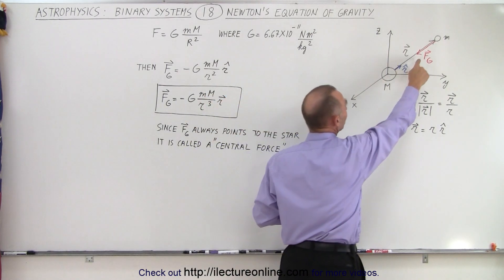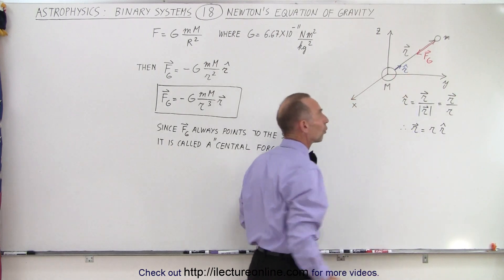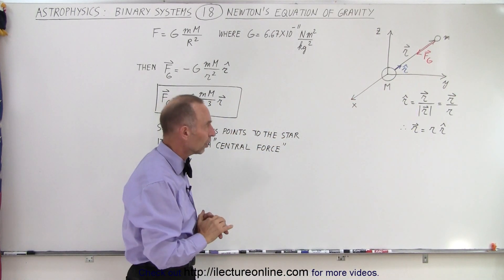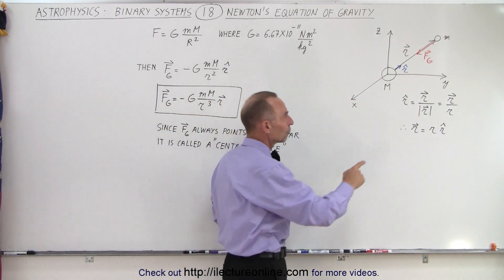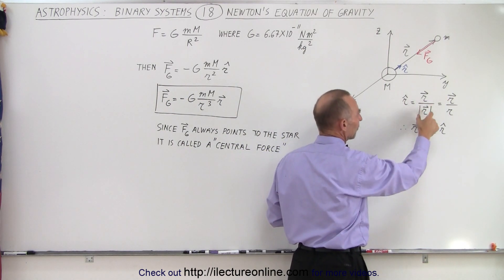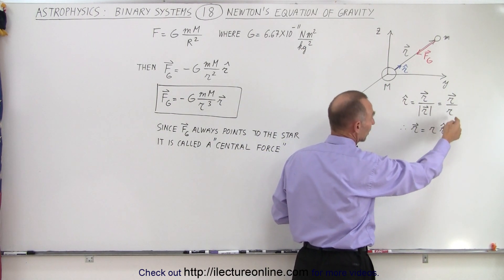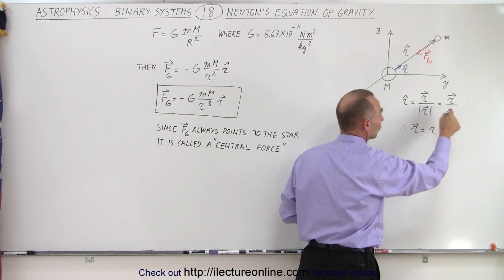Notice that it's in the opposite direction as the position vector R, or the unit vector R. Now, if we think about the unit vector R as being the position vector divided by its magnitude, which could also be written as the position vector by its magnitude this way...